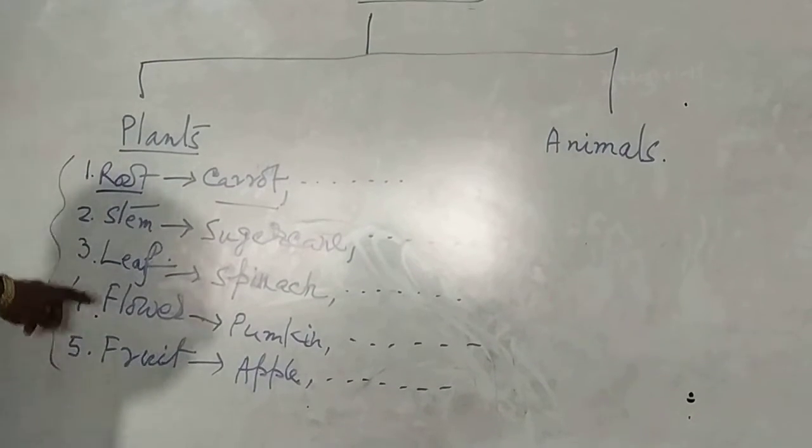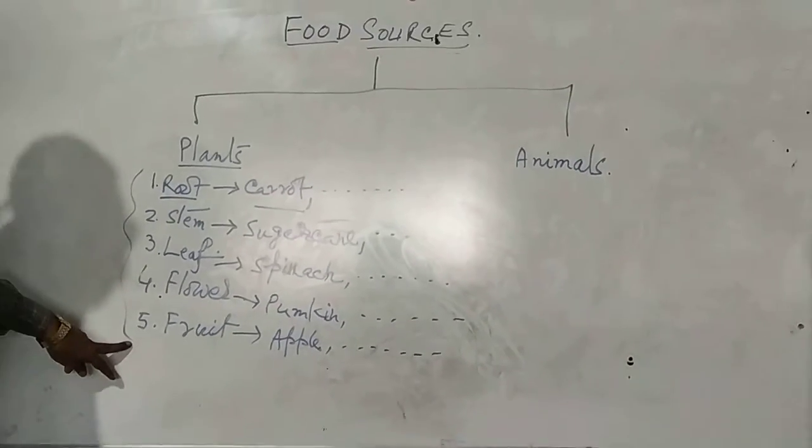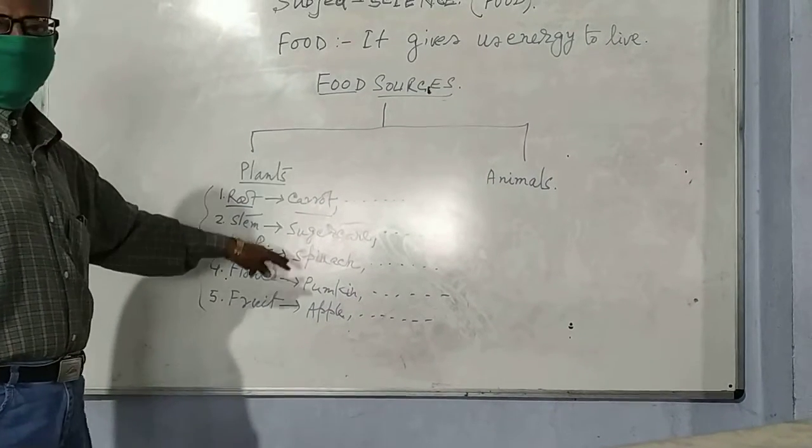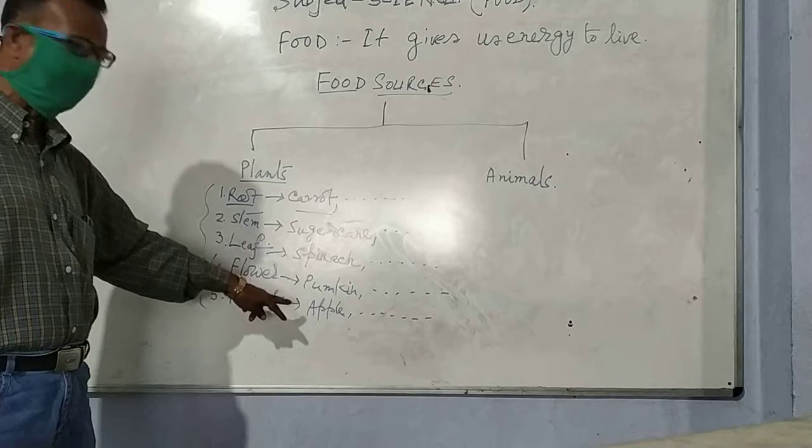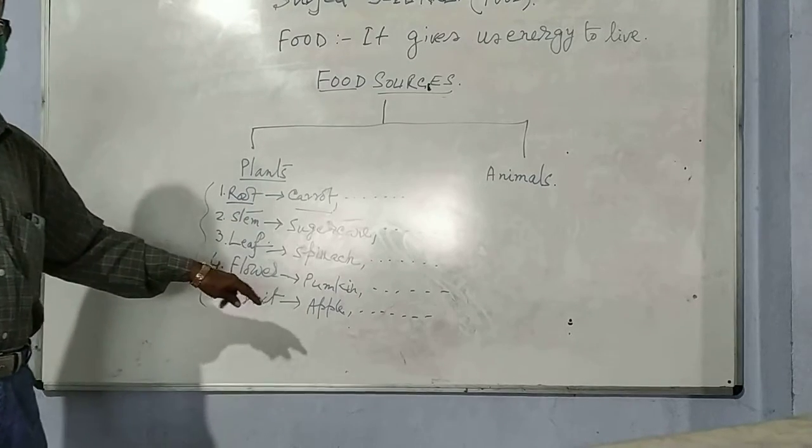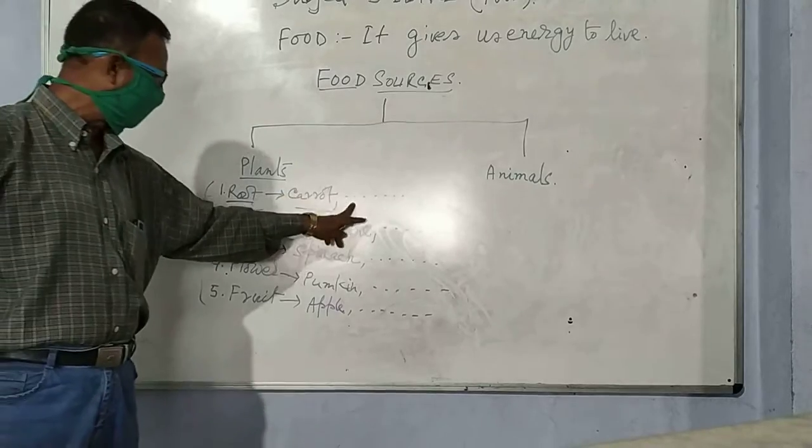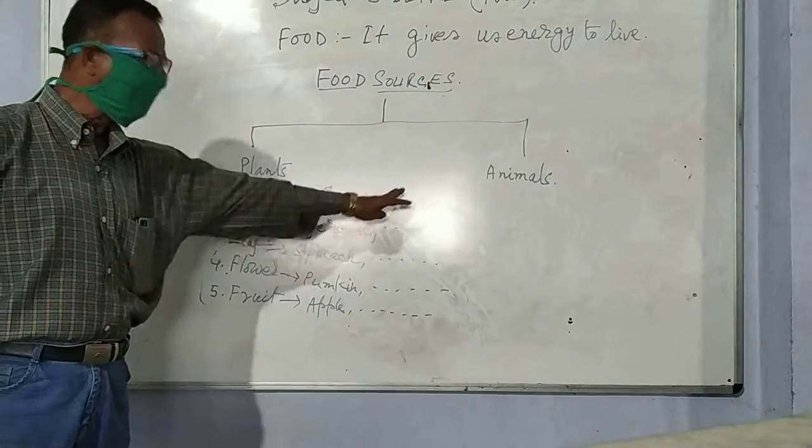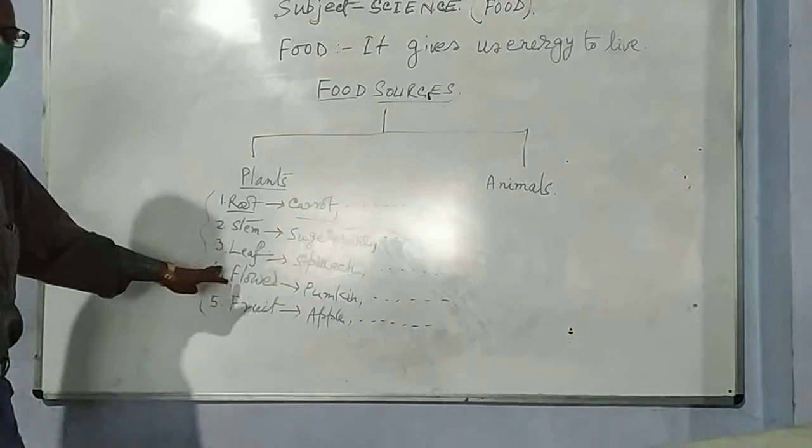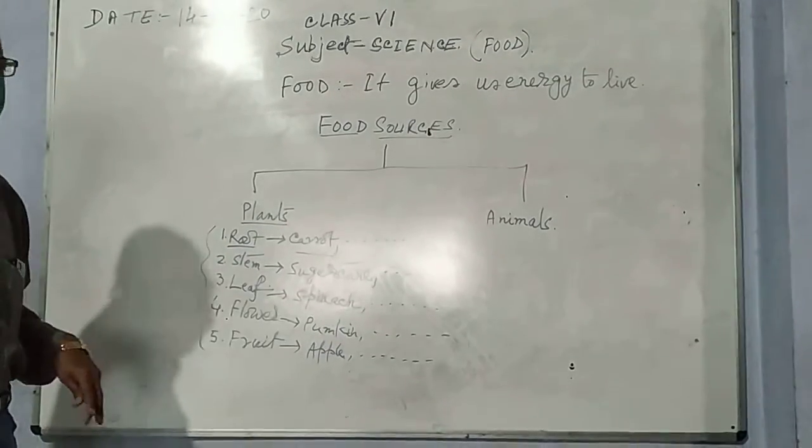So plant parts, five parts are taken as our food from plants. One is the example written by me. Another part, another examples, at least three examples of all should be filled by you in your copy.